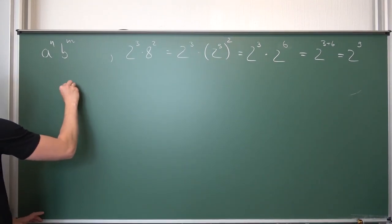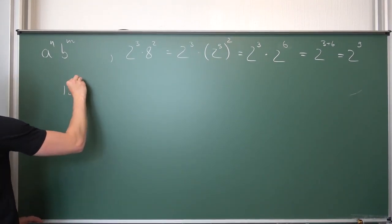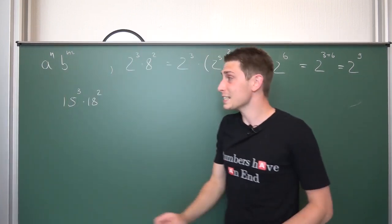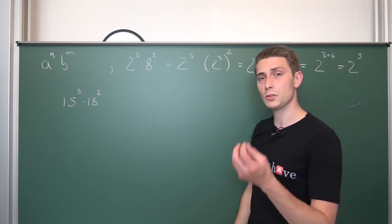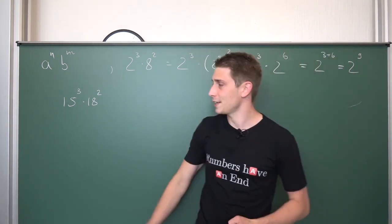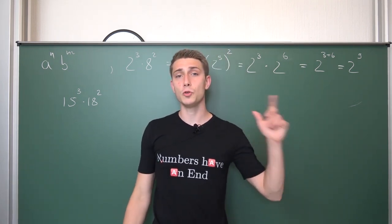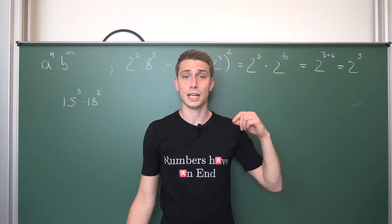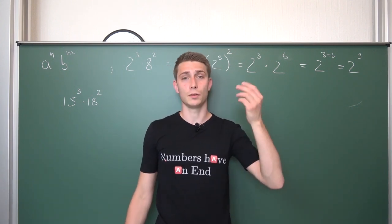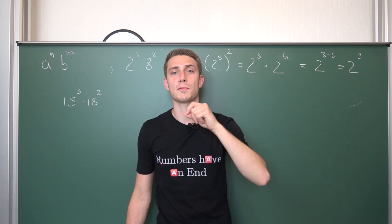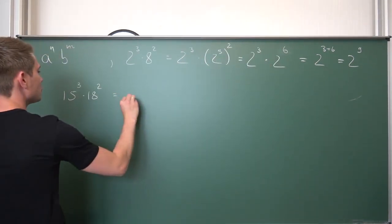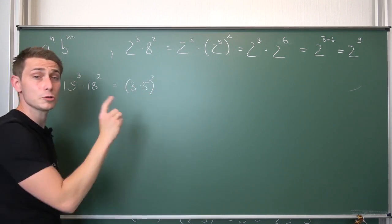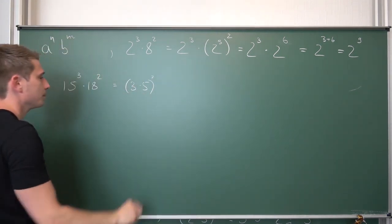Let us take a look at 15 to the 3rd power times 18 squared. And this yet again doesn't look like something that we can simplify. But we are going to take a look at the prime factorization yet again. Let us begin with 15. There are actually only two ways really to write 15 as a product of things. Either you take 1 times 15 or you take 3 times 5. We are going to rewrite the 15 as 3 times 5. And this whole thing to the 3rd power. Use the associativity again. It's important here.